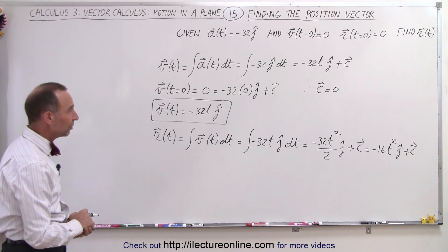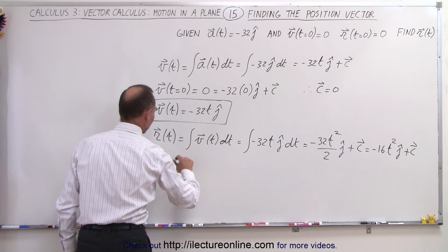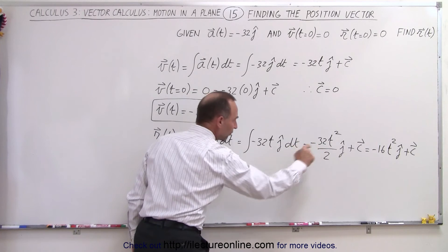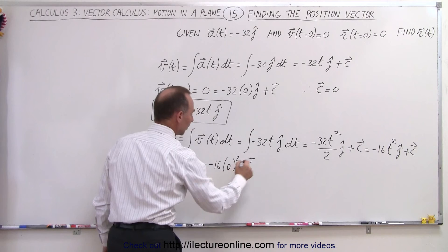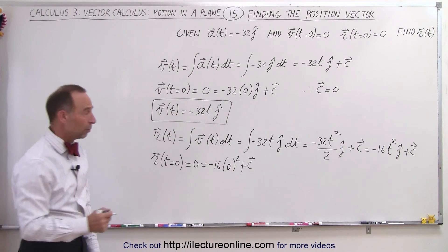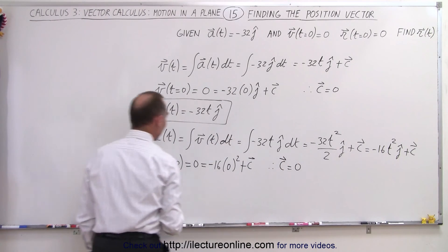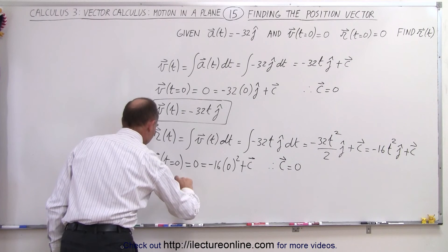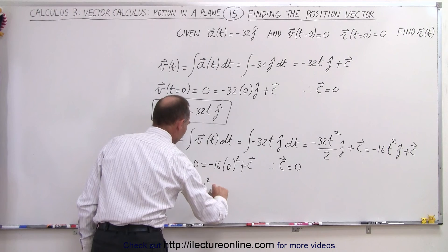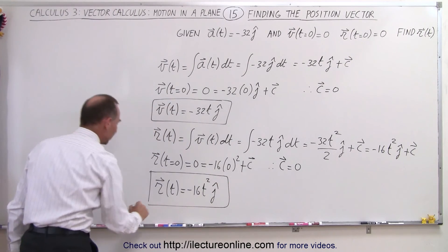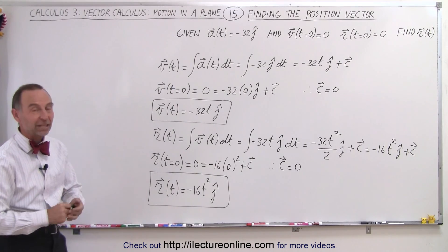That constant is a vector. We're also given that the position when time equals 0 is 0, so when we plug in 0 we get minus 16 times 0 squared plus the constant of integration, which shows us that the constant must also be 0. Therefore the position vector as a function of time is equal to minus 16t squared in the j direction. And that's how we find the position vector starting with the acceleration vector.